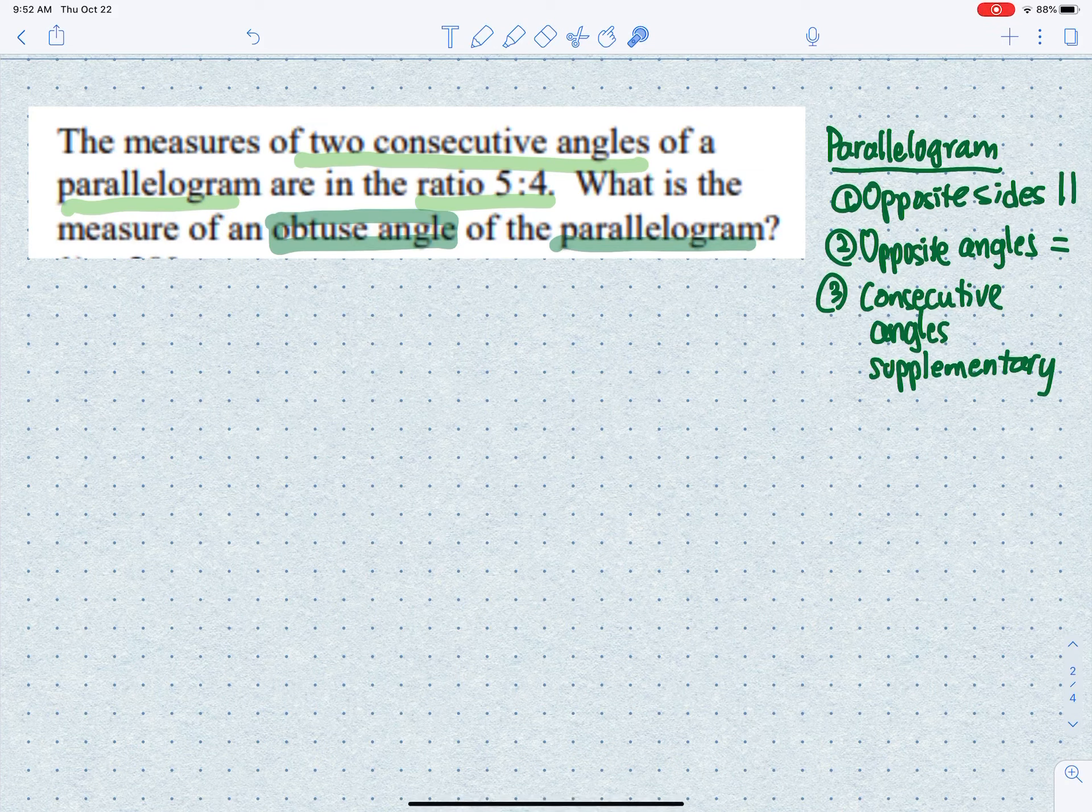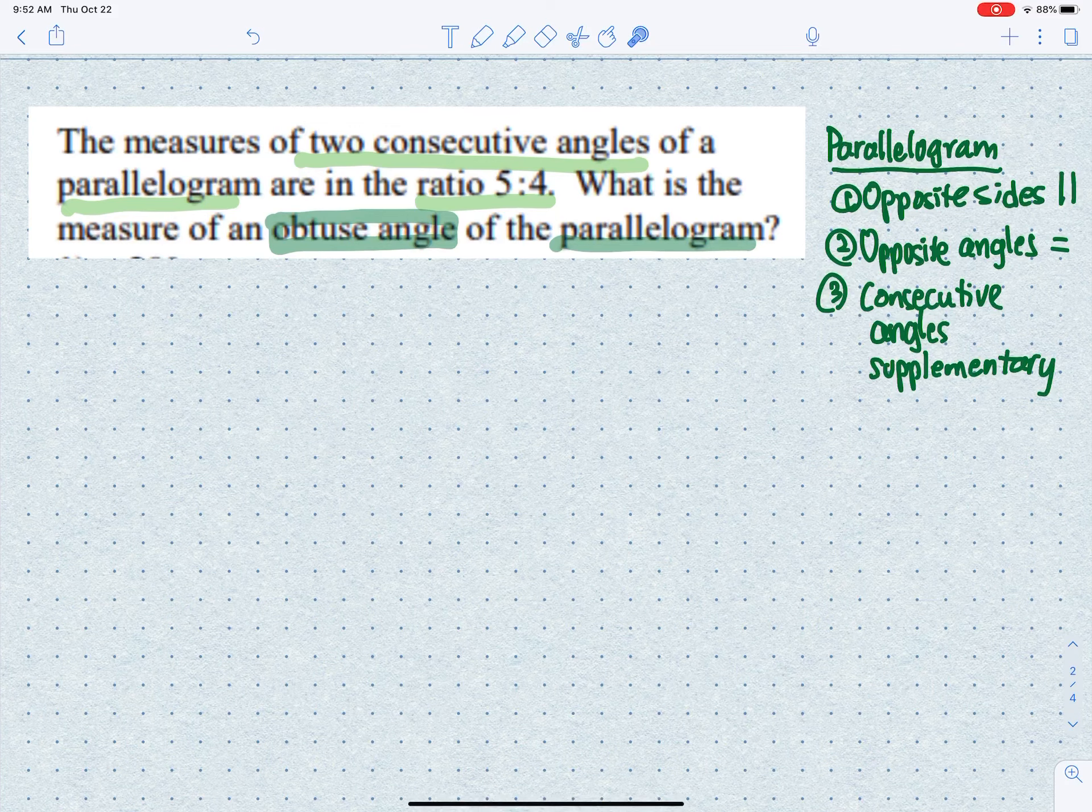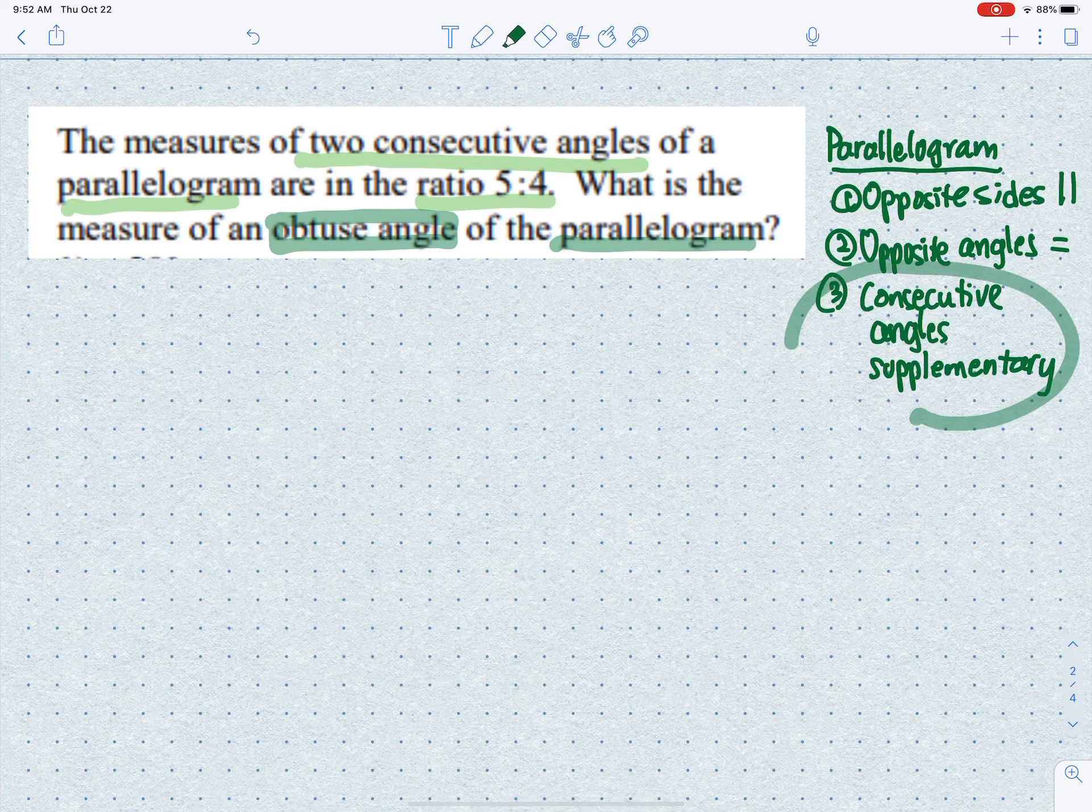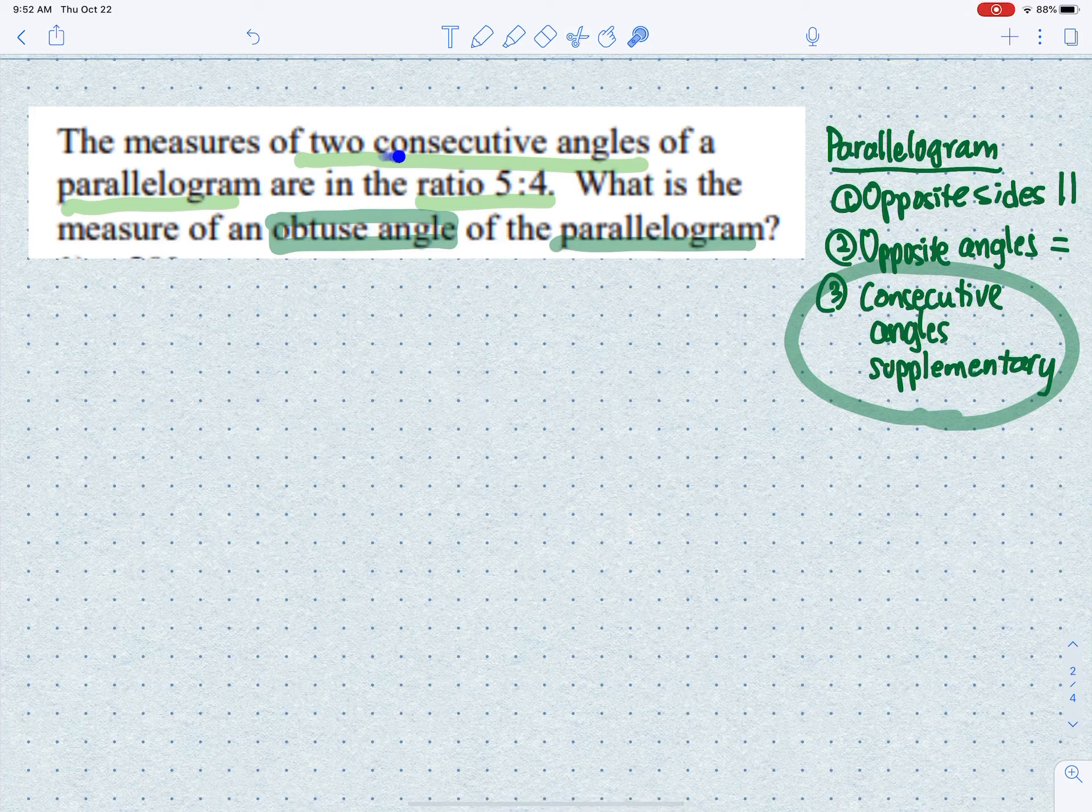First of all, a parallelogram has six properties, but in class we focused on three. Out of those three, we're going to focus on the last one: consecutive angles are supplementary. The reason is that's what the problem mentions—two consecutive angles. So we're going to focus on this rule.